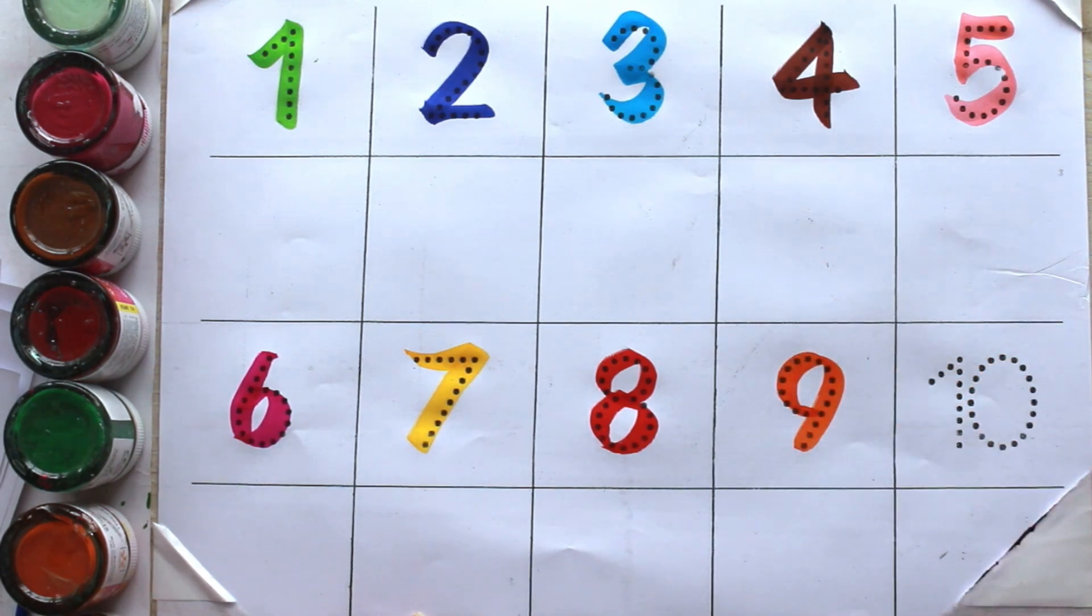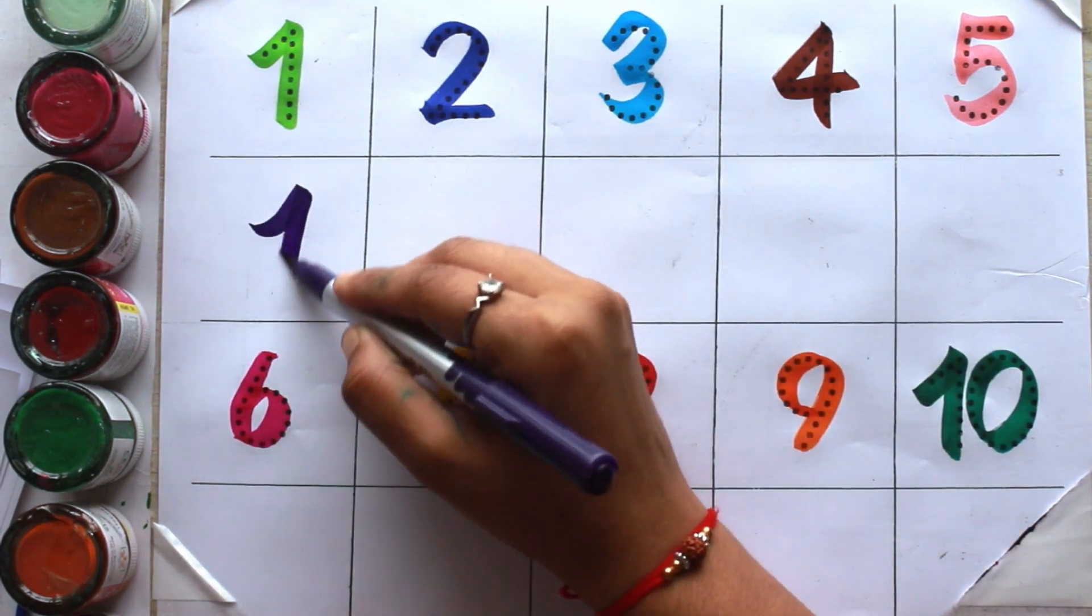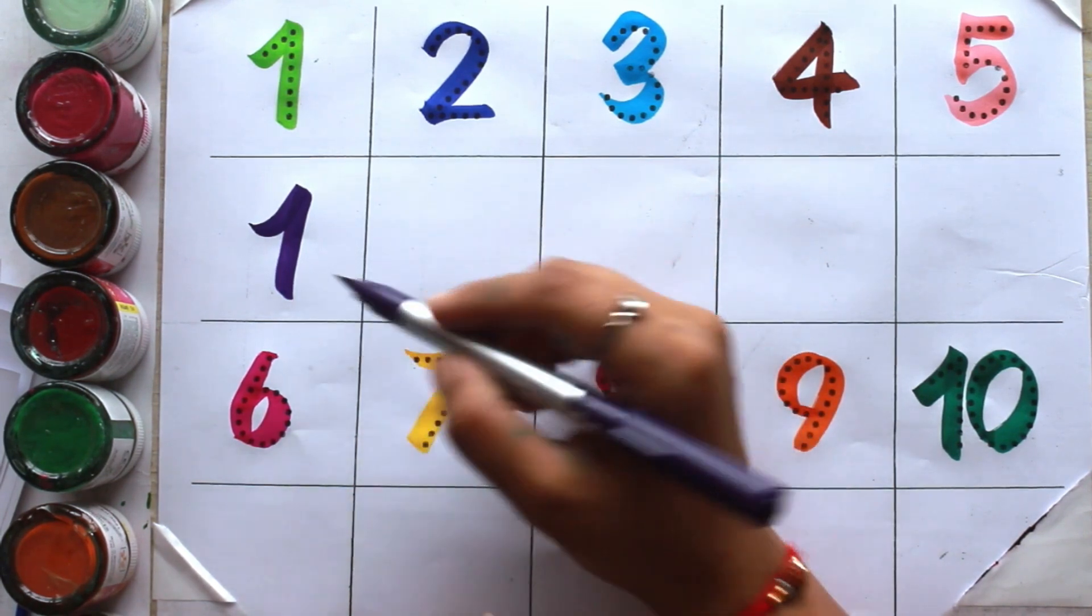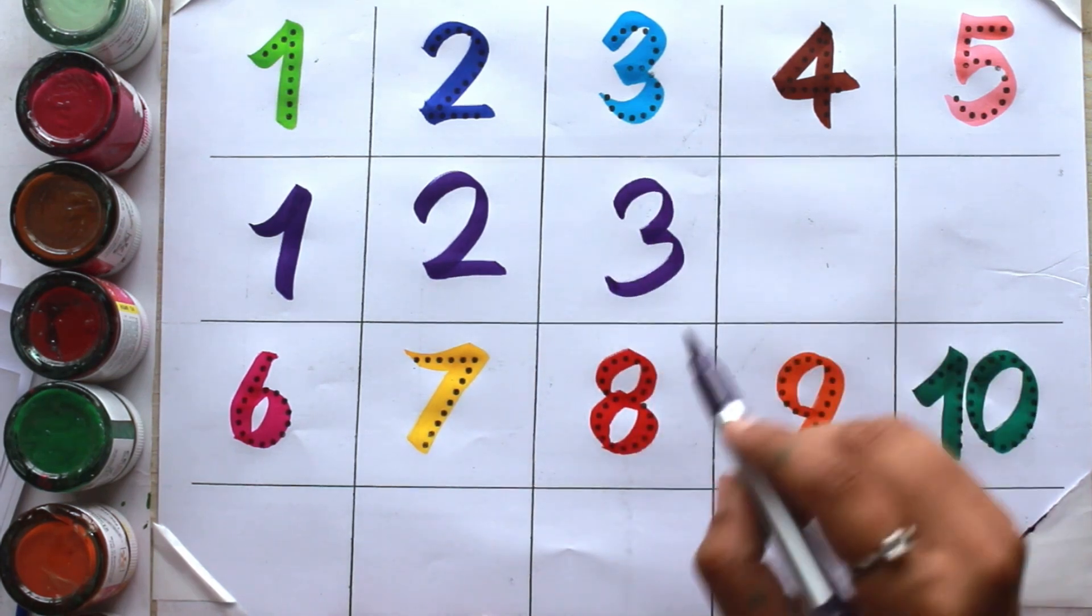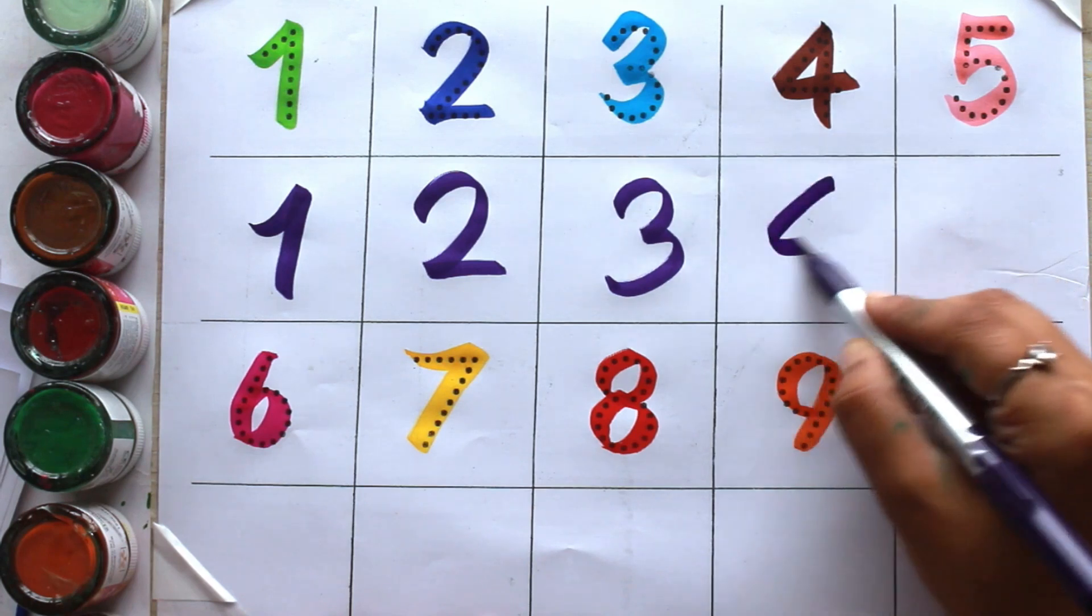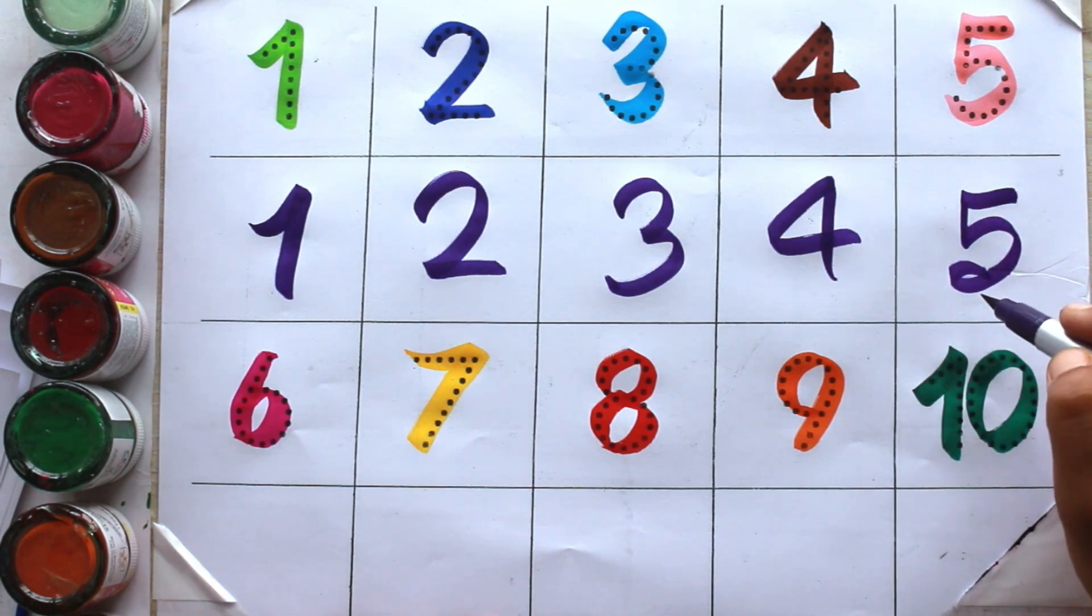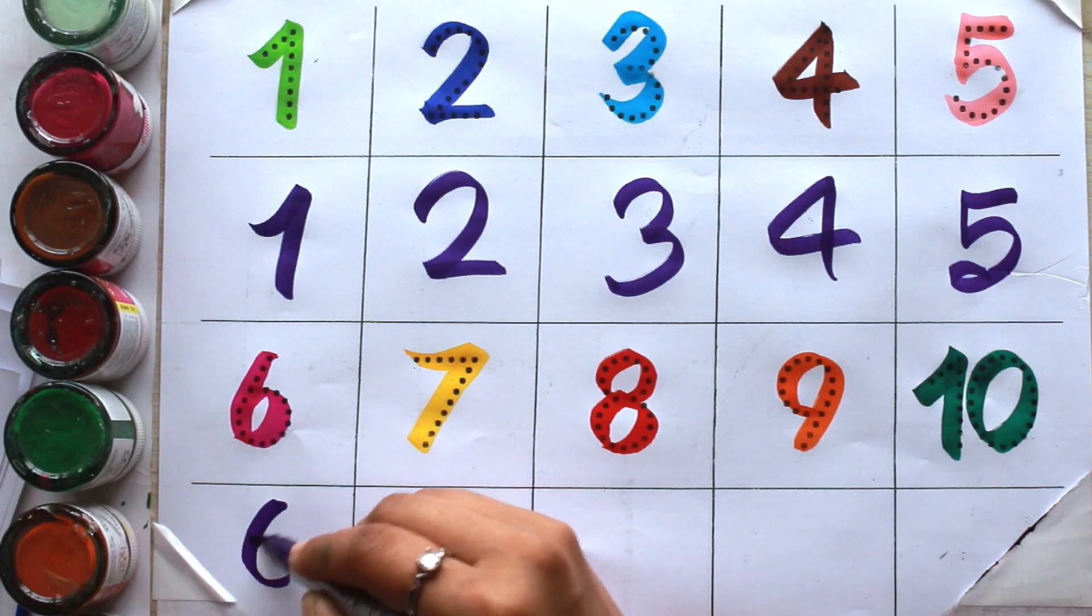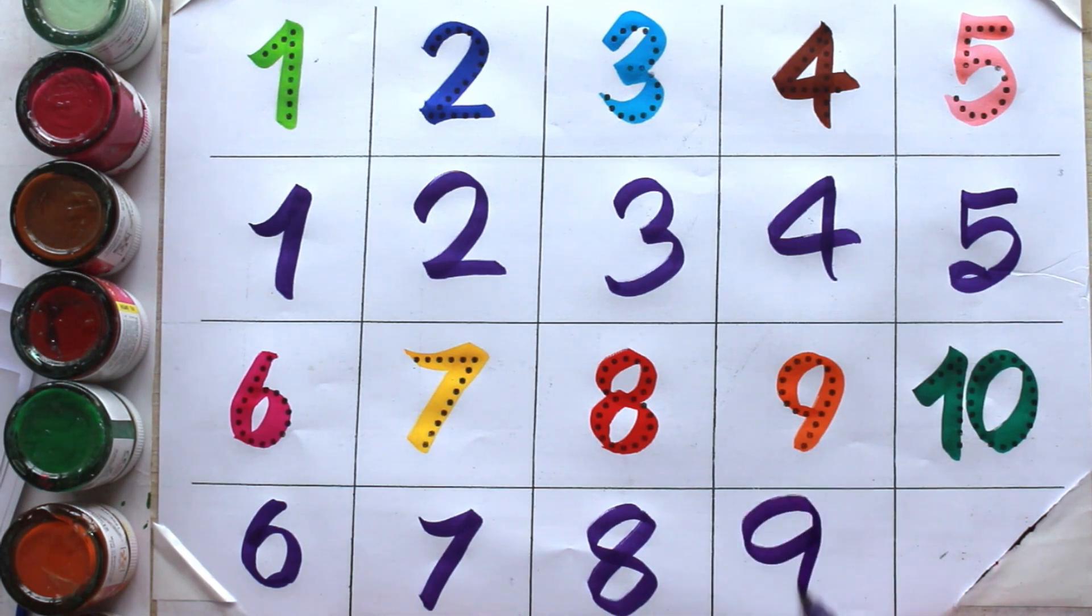Violet color 1, O-N-E 1. 2, T-W-O 2. 3, T-H-R-E 3. 4, F-O-U-R 4. 5, F-I-V-E 5. 6, S-I-X 6. 7, S-E-V-E-N 7. 8, E-I-G-H-T 8. 9, N-I-N-E 9.